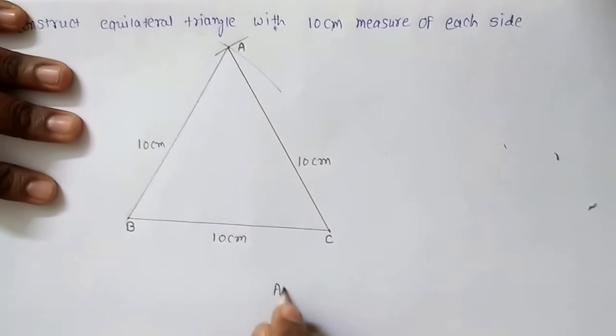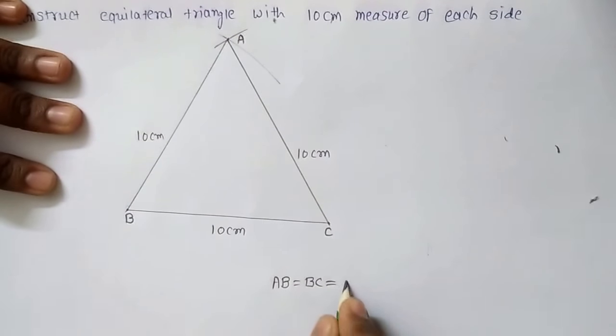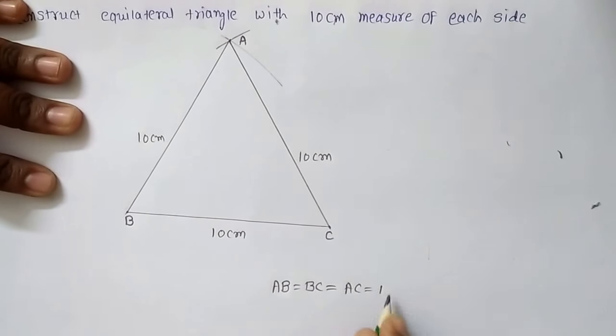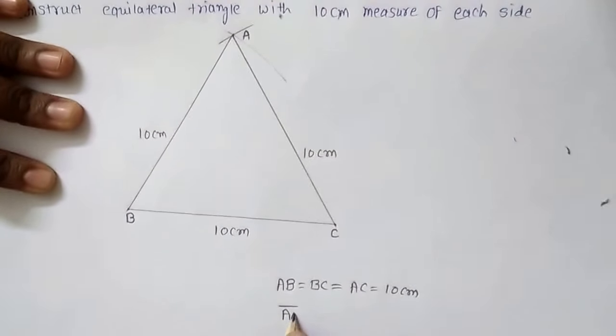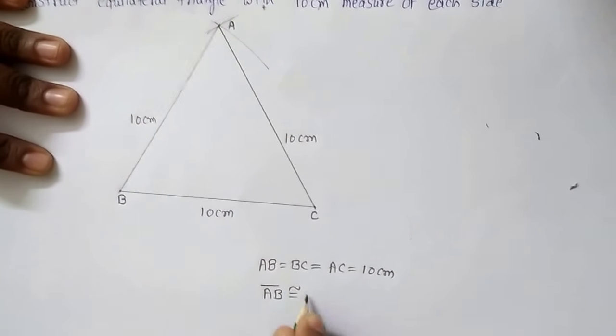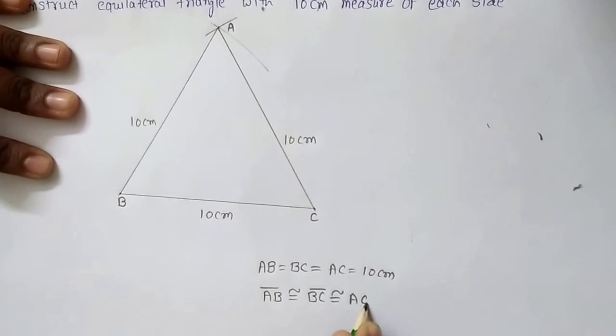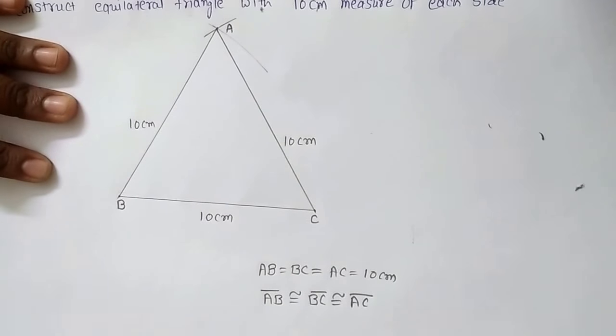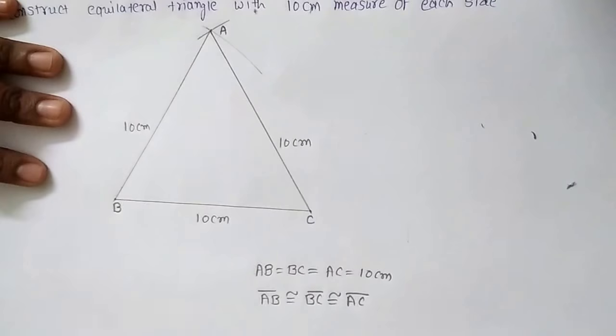So I can say that AB is equal to BC is equal to AC will be equal to 10 cm. So by that mathematics I can say that AB is congruent to line segment BC is congruent to line segment AC. If all the three sides are congruent to each other then the triangle is equilateral triangle.